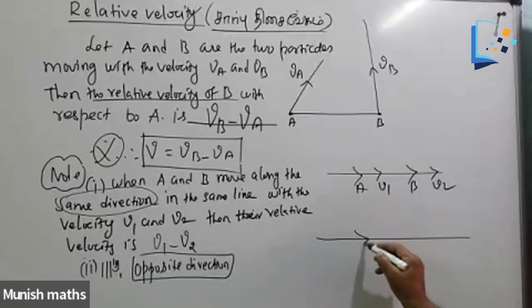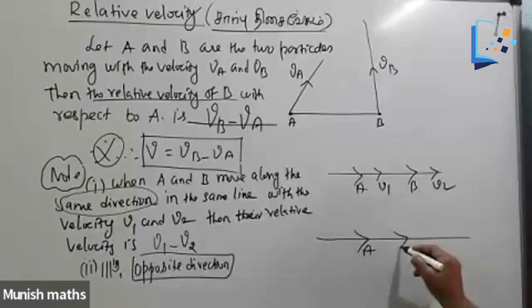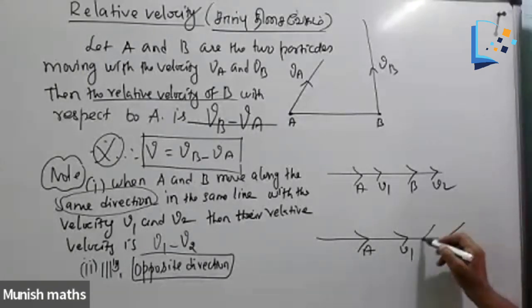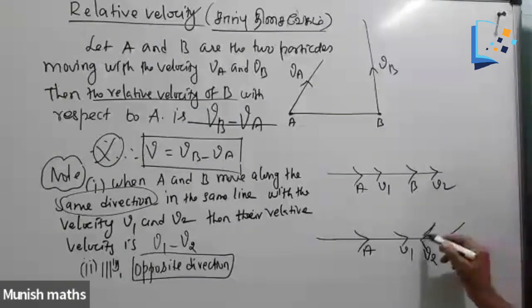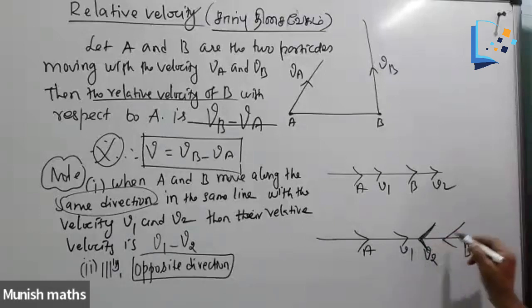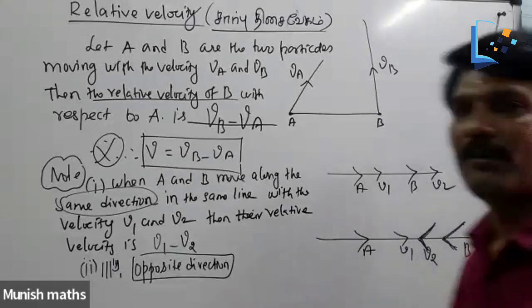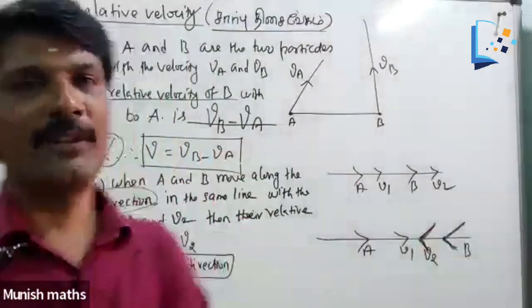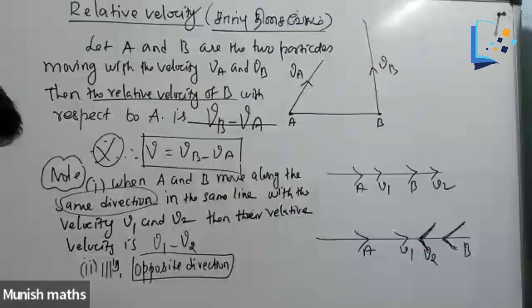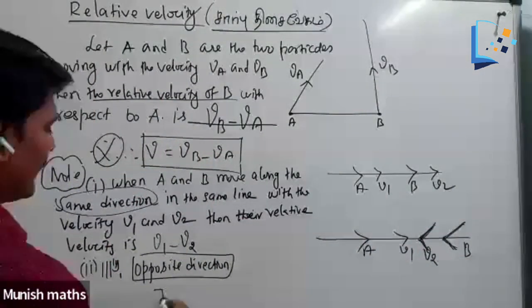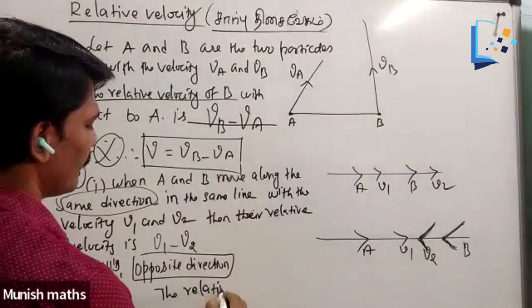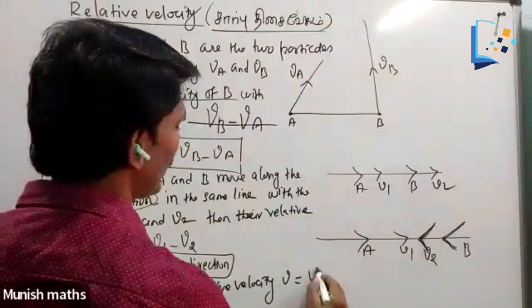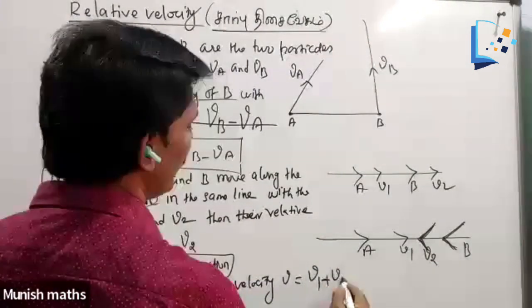Diagram. A has velocity V1. B has velocity V2. The relative velocity Vz equals V1 plus V2.